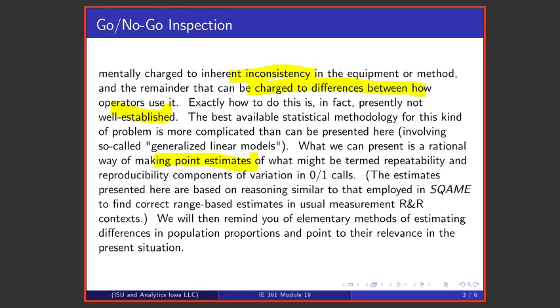But what we can do is present at least a rational way of making some point estimates—not making intervals, but at least point estimates of what might be termed repeatability and reproducibility components for go/no-go or zero/one observations. That's what we're going to do in the next three modules.